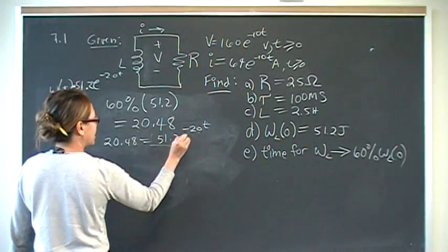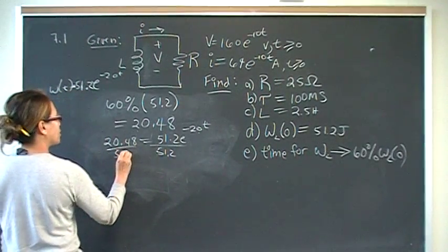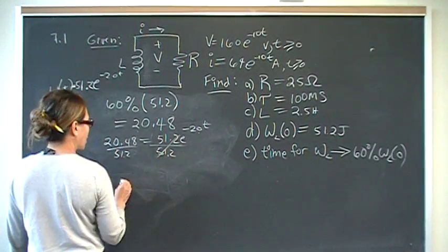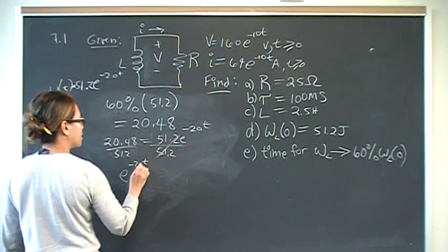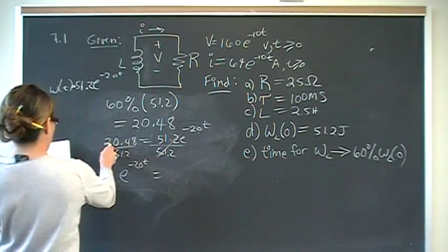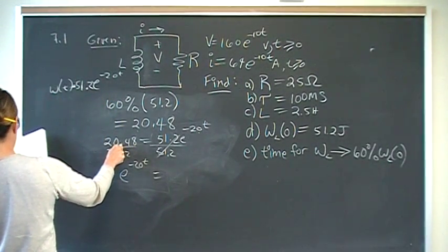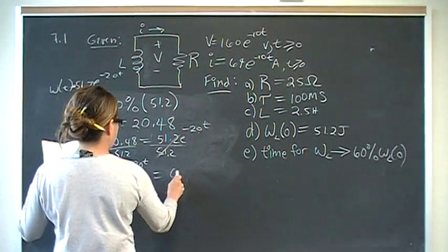So to do that, we need to isolate time. 51.2 here, 51.2 here. Now we're just going to move this to the right side. E to the negative 20t is equal to this number, 20.48 divided by 51.2 ends up being 0.4.